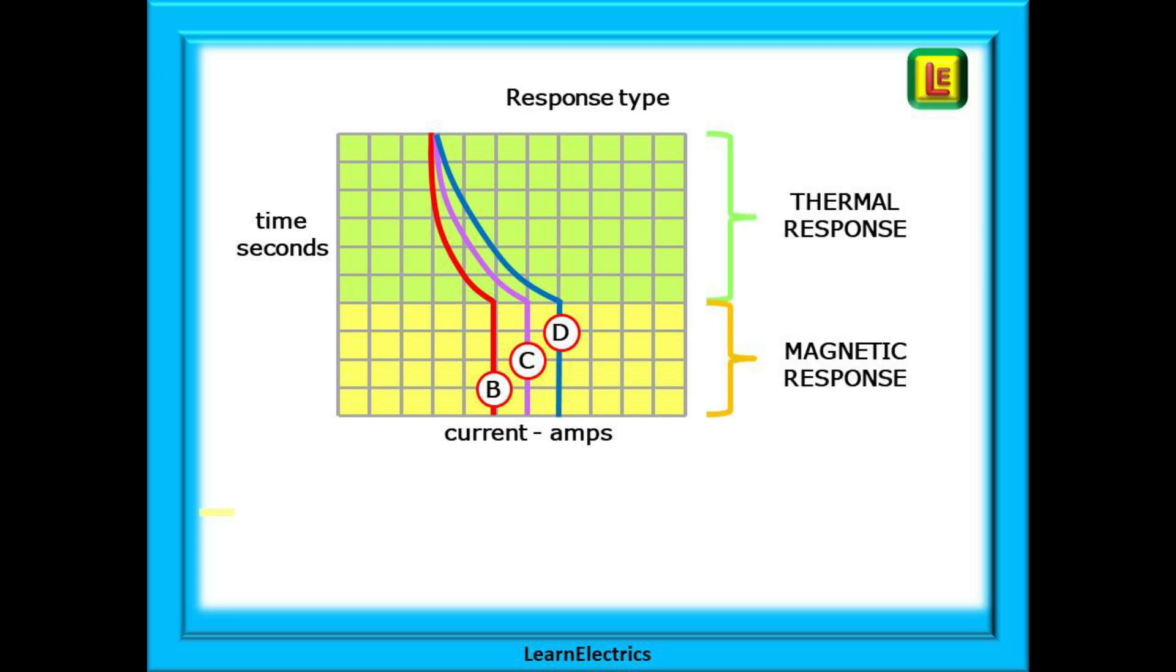So where does the knee fit in? The knee divides the chart into two halves. The upper half is the thermal response part telling you what happens to the bimetallic strip. The lower half below the knee is the magnetic response of the solenoid which is pretty much instant.